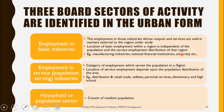Examples of basic industry employment are manufacturing industries, national financial institutions, and universities. The next sector is employment in service industries — this category of employment serves the population in the region, and the location of service employment depends upon the population distribution of the area. Examples include distribution and retail trade, utilities, personal services, and elementary and high schools.